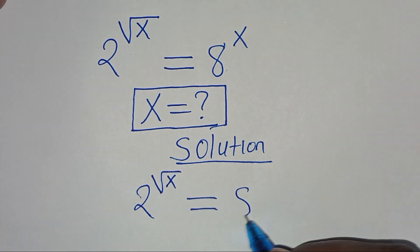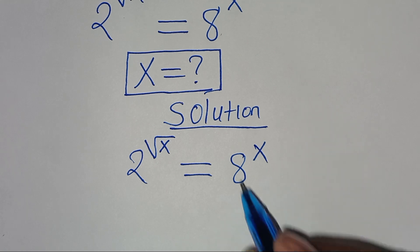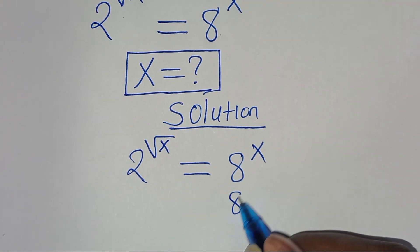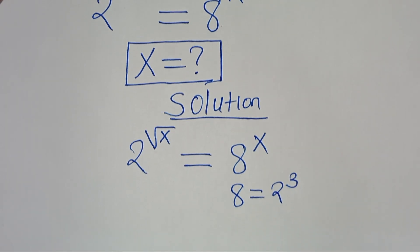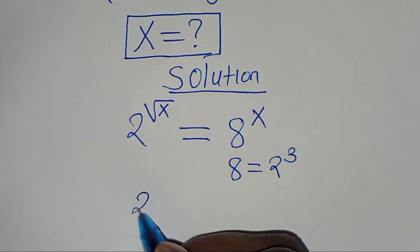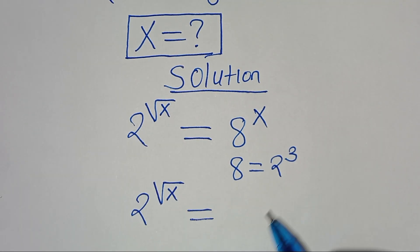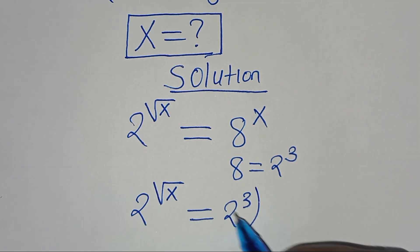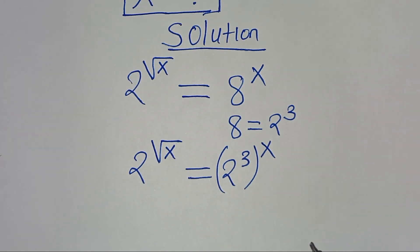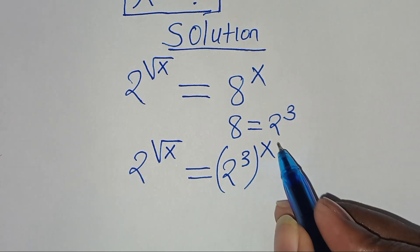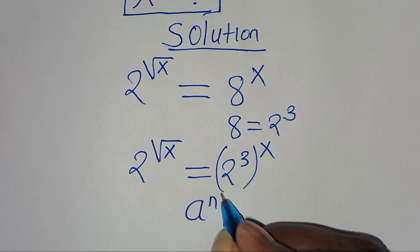We have 2 to the power of square root of x, this is equal to 8 to the power of x. The first step is to express 8 as 2 to the power of 3. So we have 2 to the power of square root of x, this is equal to 2 to the power of 3, raised to the power of x. Now 2 to the power of 3, raised to the power of x, is in the form of a to the power of n raised to the power of m.